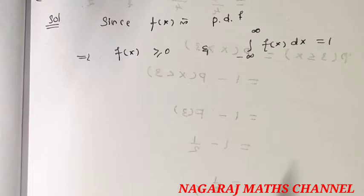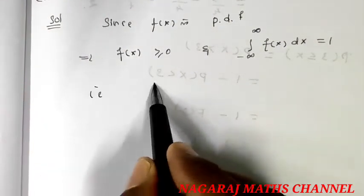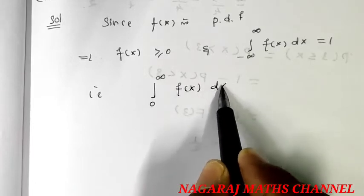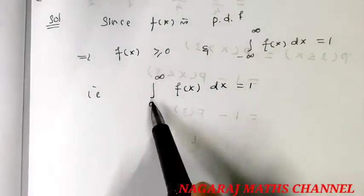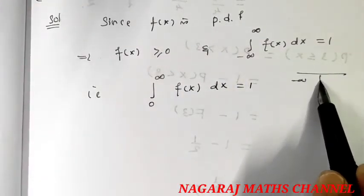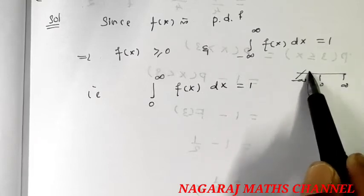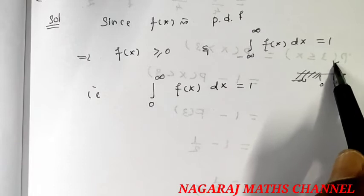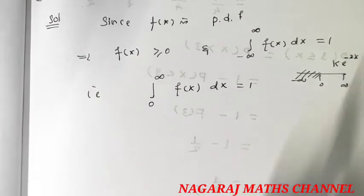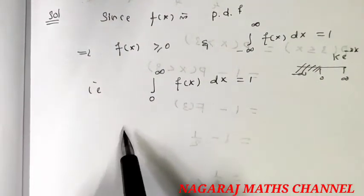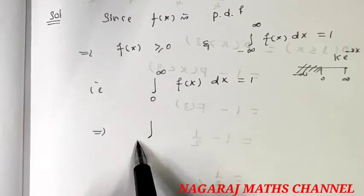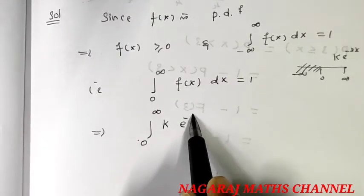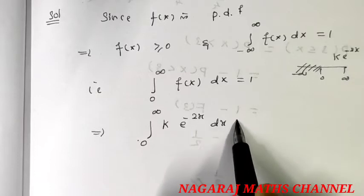So the integral from 0 to infinity of k times e to the power of minus 2x equals 1. That is, integral from 0 to infinity of k times e to the power of minus 2x dx is equal to 1.